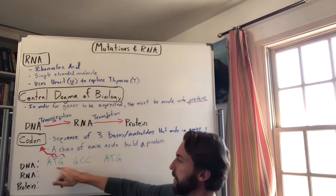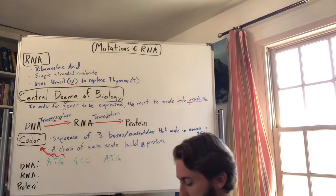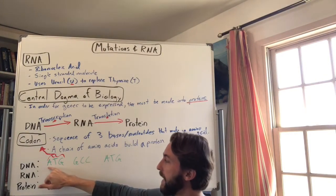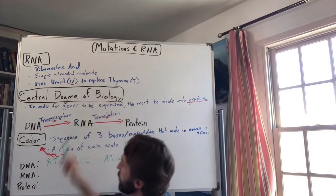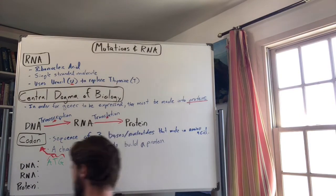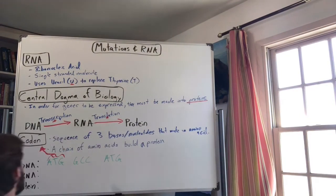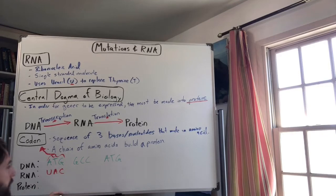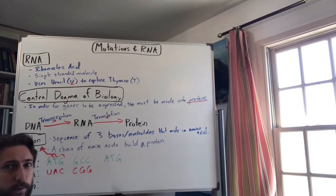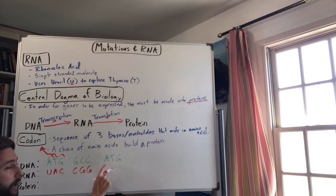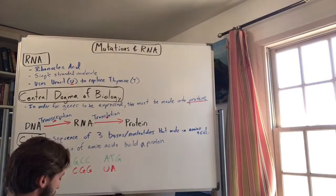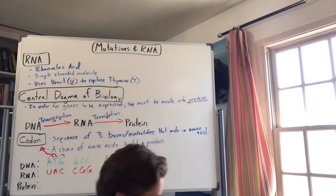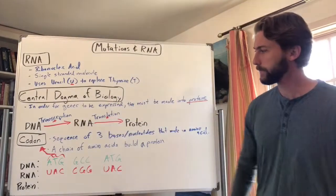Now we need to transcribe the DNA into RNA. Remember the complementary base pairing from DNA — we do the same thing here. But remember, there's no thymine in RNA, only uracil. So A codes for U in RNA. Then T pairs with A, G with C, G with C, C with G — and for the last codon: A with U, T with A, G with C.